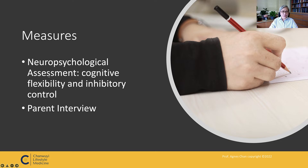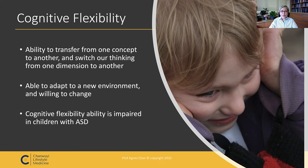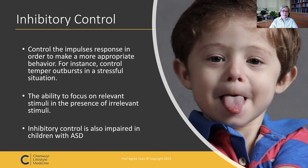The measures we used include a neuroscience assessment measuring cognitive flexibility and inhibitory control, as well as parent interviews. Cognitive flexibility is the ability to transfer from one concept to another and to switch thinking from one dimension to another — it helps us adapt to new environments. Inhibitory control is the ability to suppress impulsive responses to make more appropriate behavior, and to focus on relevant stimuli in the presence of irrelevant stimuli. Both abilities are impaired in children with ASD.